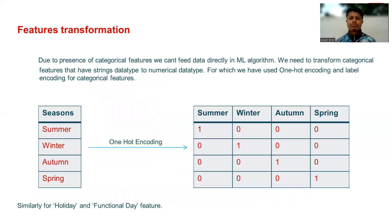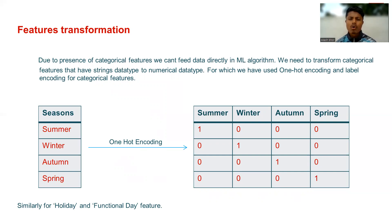Feature transformation: due to the presence of categorical features, we can't feed data directly into ML algorithms. We need to convert categorical features with string data types to numerical data types. For this, we used one-hot encoding for the season feature — summer, winter, autumn, and spring.